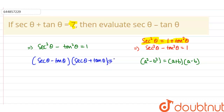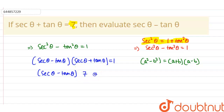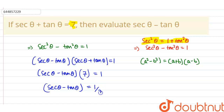Since secant theta plus tan theta is equal to 7, we substitute: 7 multiplied by (secant theta minus tan theta) equals 1. Therefore, secant theta minus tan theta is equal to 1 by 7. Our final answer is 1/7.